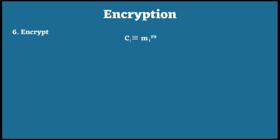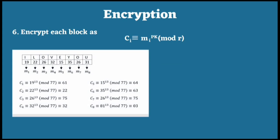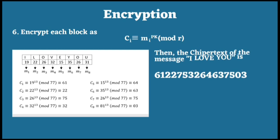The sixth step: encrypt each block with the formula Ci ≡ Mi^PK (mod R). From the message, M1 equals 19, M2 equals 22, M3 equals 26, and so on. We substitute each value of M into the formula to get the value of C. Then we sort the values of C starting from C1, C2, and so on until C9. Thus, we get the ciphertext code from the message 'I love you' is 6122753264637503.